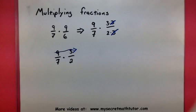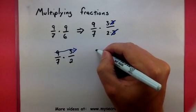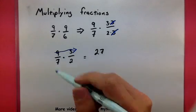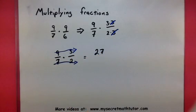So, 9 times 3 will give us a 27. And then we have a 7 times 2, or a 14.